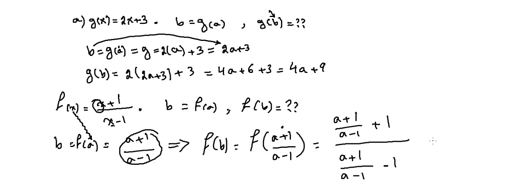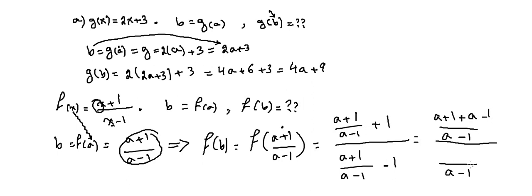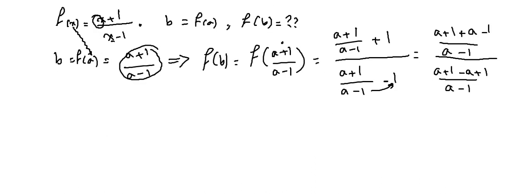We simplify by taking the common denominator (A minus 1) in both numerator and denominator. In the numerator: (A plus 1) plus 1 times (A minus 1), and multiplying (A minus 1) by minus 1 gives minus A plus 1. The (A minus 1) factors cancel. What remains in the numerator is 2A plus 2, and the denominator simplifies to 2, giving a final answer of A.